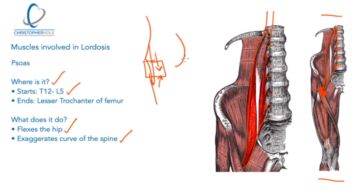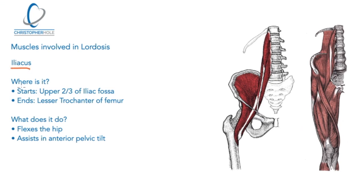Now we're going to look at muscles that affect the anterior pelvic tilt that comes along with lordosis. The first one is the iliacus, which is very closely related to the psoas. You can see it all the way around the bowl of the pelvis and then coming down. It's right next to the psoas and also joins in at the same place — the lesser trochanter of the femur. You can see the femur here; the lesser trochanter is on the inside, with the psoas and the iliacus both coming down to join there.